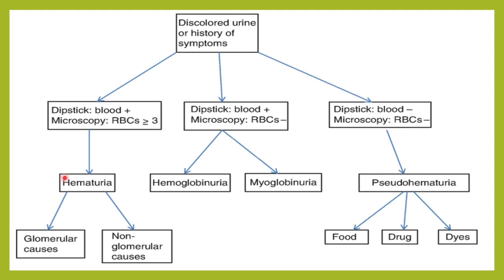Hematuria can be because of glomerular causes like glomerulonephritis, or it could be because of non-glomerular causes like UTIs, stones, etc. Suppose you did a dipstick, got blood positive, and did a microscopy but were not able to find any RBCs — that suggests the patient could be having hemoglobinuria or myoglobinuria. In hemoglobinuria and myoglobinuria there will be no RBCs seen on the microscope when you examine the urinary sediment.